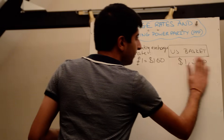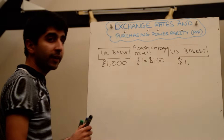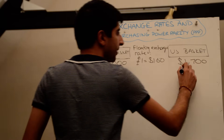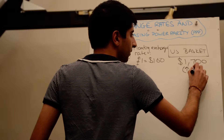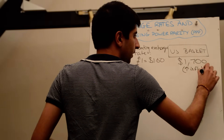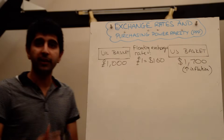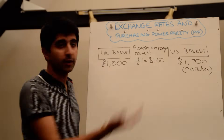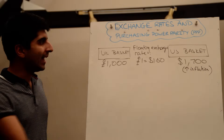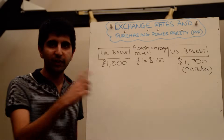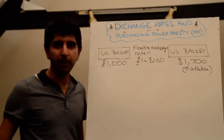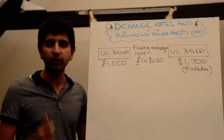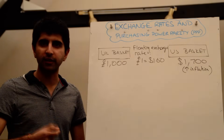Let's now say that the value of the US basket increased to $1,700 — maybe because of an increase in inflation. Perhaps wages in the USA increased, which fed through to higher inflation, meaning the US basket actually rose in price. Let's now say that the floating nominal exchange rate stayed the same at £1 equals $1.60. All of a sudden, this exchange rate does not reflect purchasing power parity.